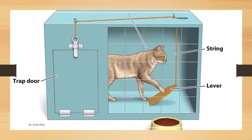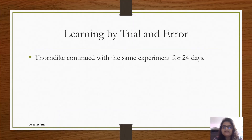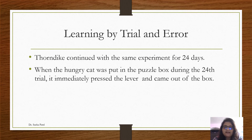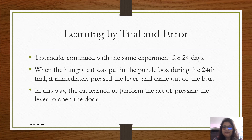Many attempts were made by the cat, and many incorrect responses were also given. But finally, repeatedly, when it was put in the box, it learned to come out by pressing the lever. Thorndike continued the same experiment for 24 days. When the hungry cat was put in the puzzle box during the 24th trial, it immediately pressed the lever and came out of the box. Learning has taken place here. In this way, the cat learned to perform the act of pressing the lever to open the door — through repetition, the cat understood that in order to come out of the box, it has to press the lever.